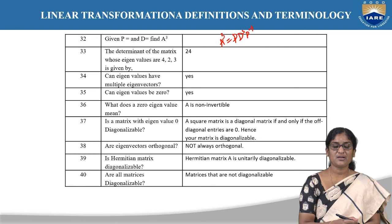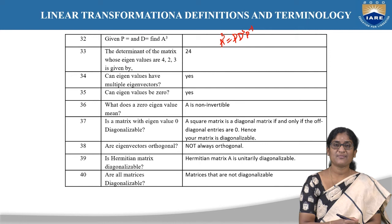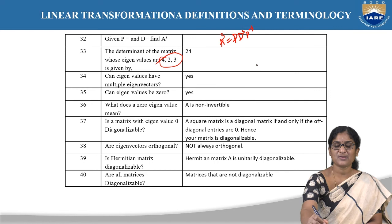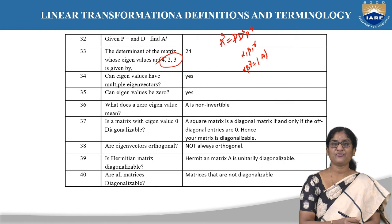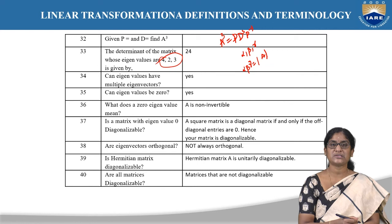What is the determinant of a matrix whose eigenvalues are 4, 2, 3? Using the property that the product of eigenvalues equals the determinant — 4×2×3 = 24 — the determinant of the matrix is 24. Even without knowing the matrix itself, we can find the determinant if we know the eigenvalues.